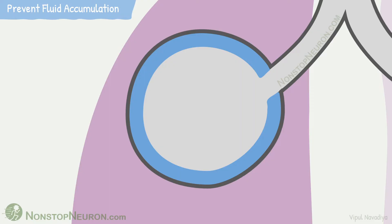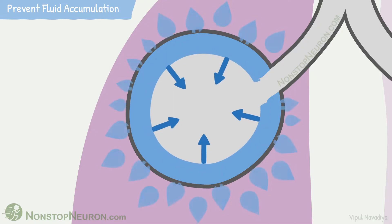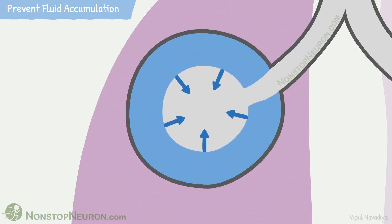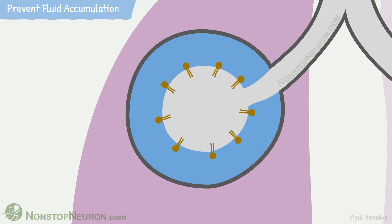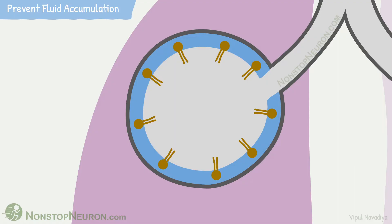Now, the second function: preventing fluid accumulation in alveoli. Again, the high surface tension without surfactants tends to collapse the liquid in the alveoli. As it collapses, it draws fluid from the interstitium into the alveoli. This increases the thickness of the fluid layer and makes it difficult for gases to diffuse. And once again, surfactants by decreasing surface tension prevent this from happening.